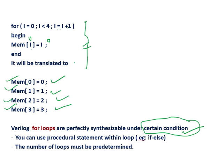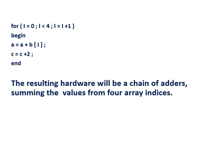You can use procedural statements within a loop. Within the for loop, you can include procedural statements — even if-else also. Inside the for loop you can write if-else as well. The number of loops must be predetermined for the for loop to be synthesizable; otherwise, your synthesis tool is not going to generate correct hardware.